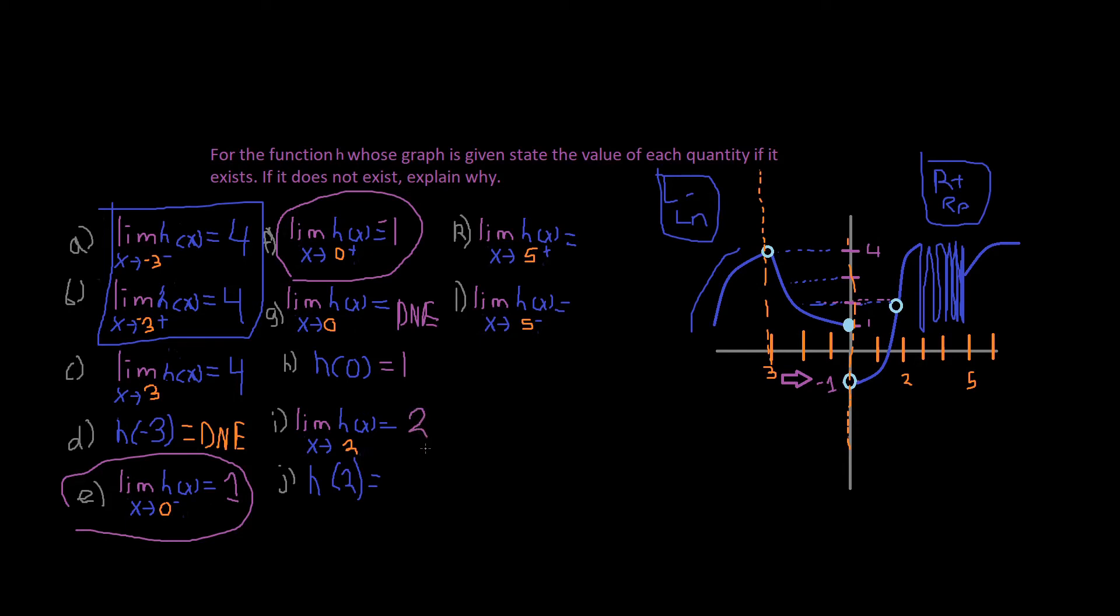Alright, so next problem, j, h of 2. H of 2. So we do our little testing again and we make a little line. It's open, so that means it does not exist. Why? Because at that given point of interest, 2, it's open so it does not exist. We could get close to the limit and it appears as if it's 2, but it's not true that it's 2.